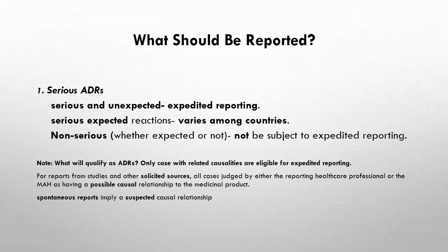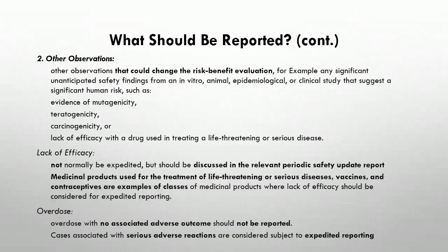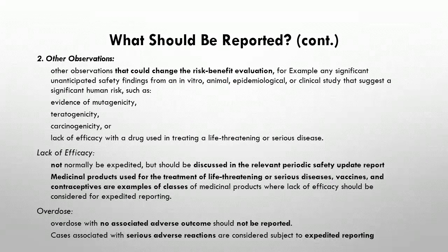For spontaneous reports associated with approved drugs, an implied suspected causal relationship qualifies as an ADR. In addition to single-case reports, any safety information from other observations that could change the risk-benefit evaluation should be communicated as soon as possible to regulatory authorities. Examples include significant unanticipated safety findings from in vitro, animal, epidemiological, or clinical studies suggesting significant human risk, such as evidence of mutagenicity, teratogenicity, carcinogenicity, or lack of efficacy with a drug used in treating a life-threatening or serious disease.